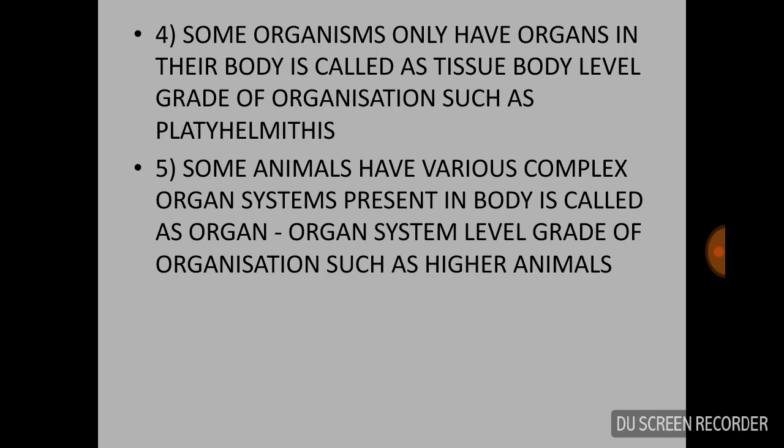Fifth level: some animals have various complex organ systems present in their body. This is called organ-system level grade of organization, and it is seen in higher animals.